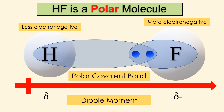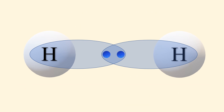But what about a covalent bond between atoms of the same electronegativity? Take the example of molecular hydrogen, H2. There is only one covalent bond, or shared pair of electrons.